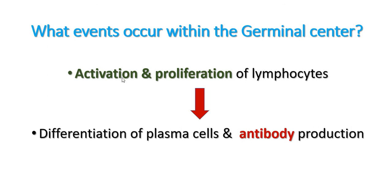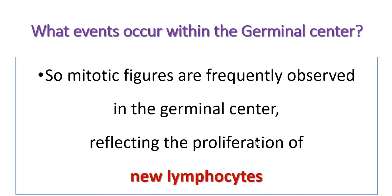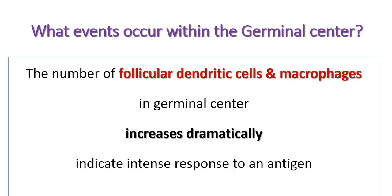The germinal center also contains plasma cells, follicular dendritic cells, macrophages, and mitotic figures. Mitosis is frequently seen here, so the processes of activation, proliferation, and differentiation of lymphocytes and plasma cells occur within the germinal center. The number of follicular dendritic cells and macrophages increases dramatically, indicating an intense response to an antigen.